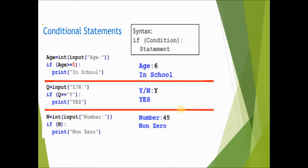In elif, if a condition is true it displays a result; if false, it checks another condition; if that's also false, it checks yet another condition — and so on. Practically, I'm going to show you these one by one. This is the simple if statement — here's what's happening.